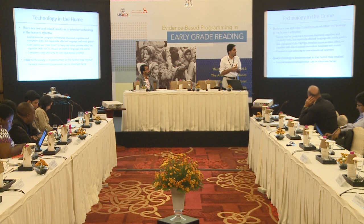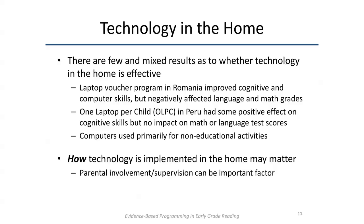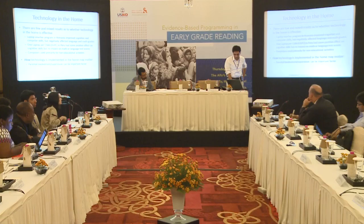Similarly, the only non-randomized controlled trial in my review — a study in Romania — found the Romanian government handed out vouchers subsidizing computer purchases for low-income households. The researchers found results very similar to the Peru study: some improvement in cognitive skills and computer fluency, but in fact negative effects on language and math scores. Again, the explanation is that this was essentially unsupervised provision of computers to kids, and not surprisingly it didn't generate particularly striking results as far as learning outcomes were concerned.